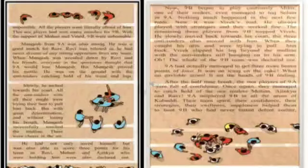Now 9th B began to play very cautiously. Mihir, one of their raiders, even managed to tag Sohan in 9th A. Nothing much happened in the next few raids. But now it was Vivek's raid. He always played with strategies and they really worked fine.